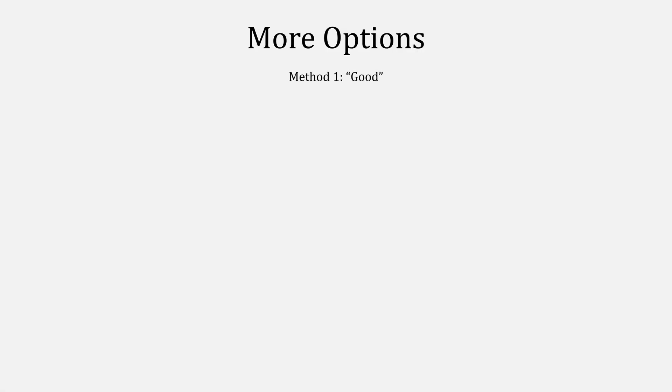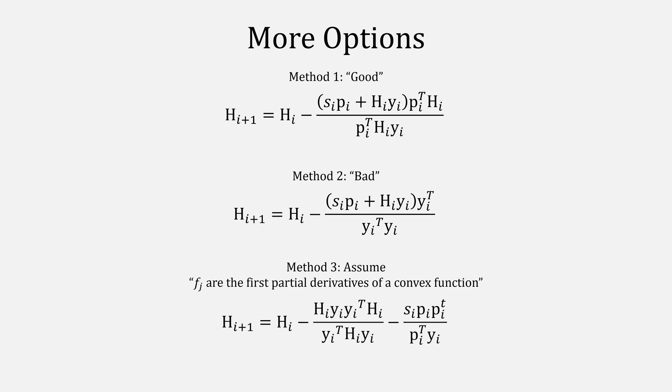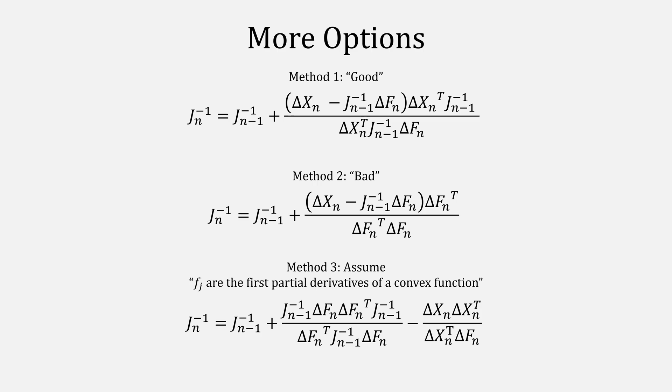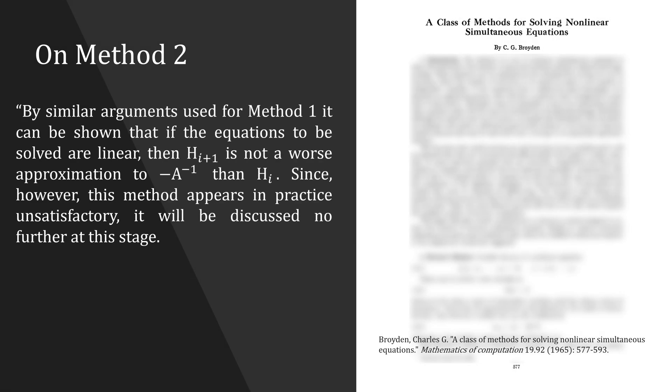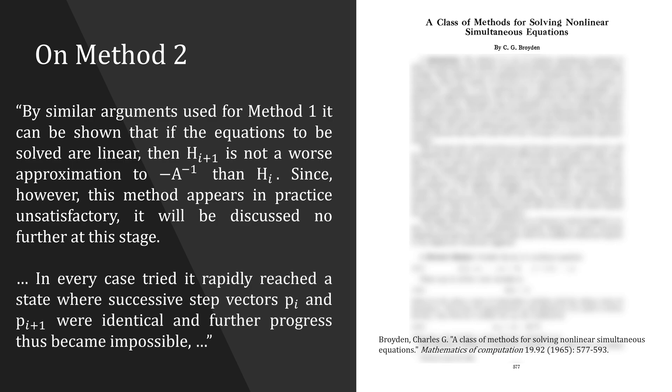That version of Broyden's method is known as the good Broyden method. There's another way that Broyden actually solved it, which is jokingly known as the bad method, and there's another method that's been sort of forgotten by history, which looks like this. In modern terms, our methods would look like this. Let's talk about where the bad method gets its reputation from. In Broyden's paper, he notes that the second method appeared unsatisfactory in practice, swiftly deciding that in every case tried it rapidly reached a state where successive step vectors p sub i and p sub i plus one were identical, and further progress thus became impossible. But is this reputation deserved?